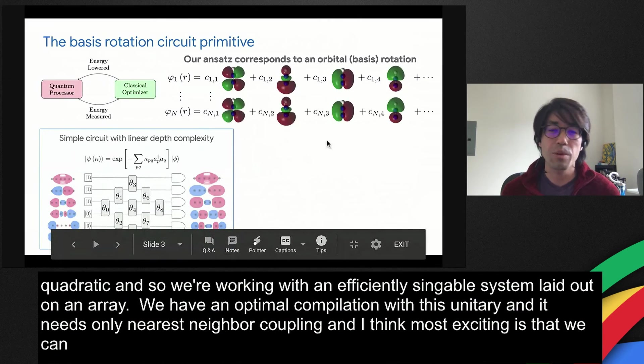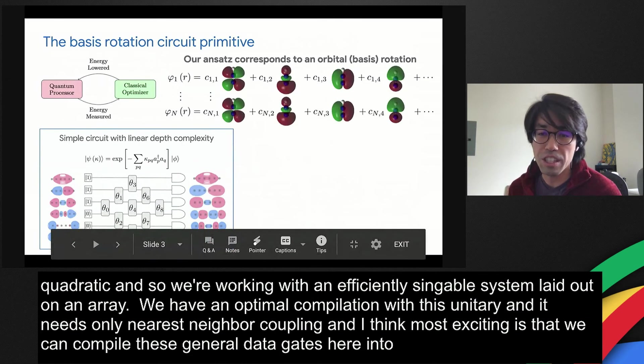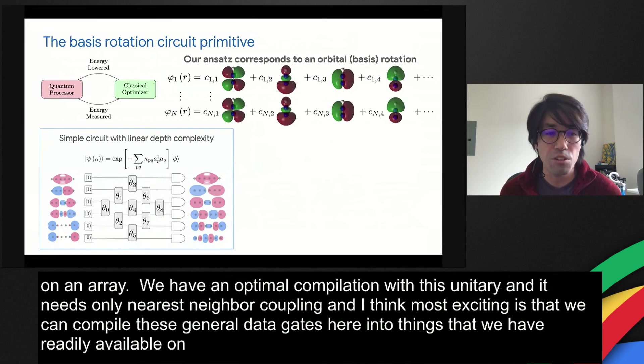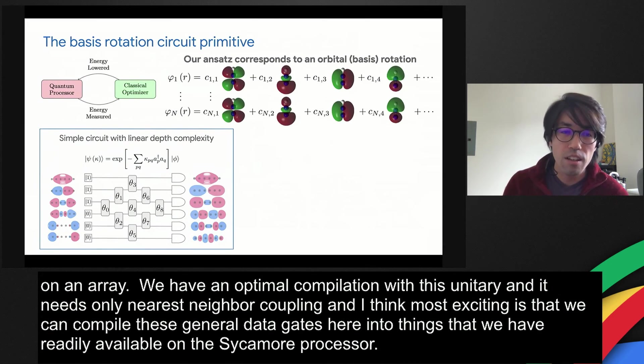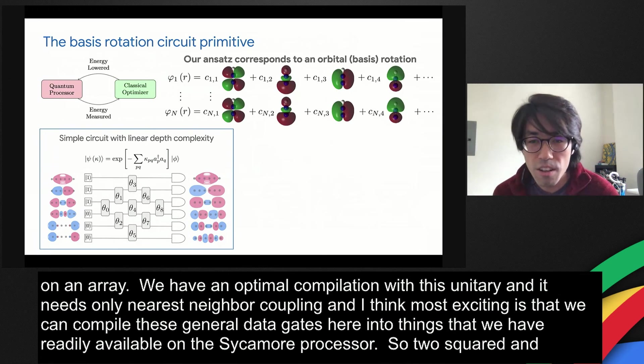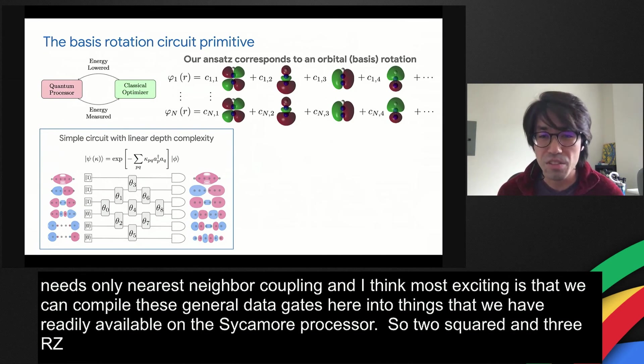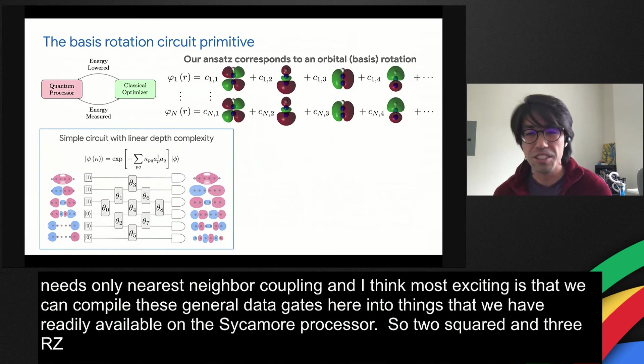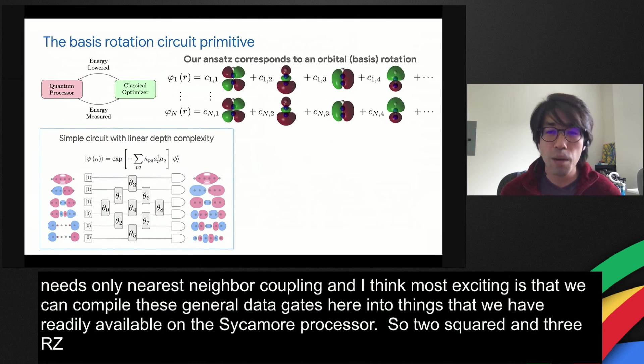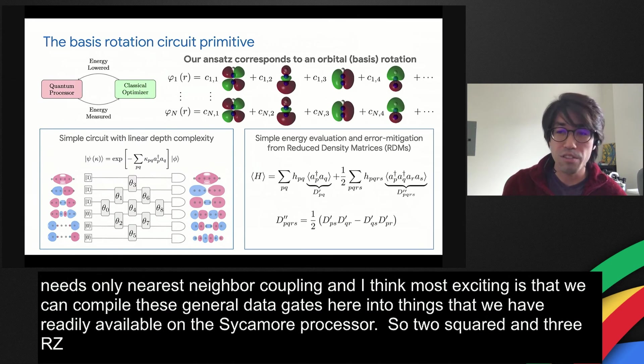Most exciting is that we can compile these general two-qubit gates, these theta gates here, into things that we have readily available on the Sycamore processor: two square root i-swap gates and three RZ gates. I've drawn a cartoon here with the circuits. On the left, there's one set of basis functions for six hydrogens. On the right, there's a new set of basis functions. This is just supposed to depict that the circuit is performing some basis rotation. If you optimize these angles and couple that with energy minimization, you get Hartree-Fock theory back.